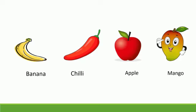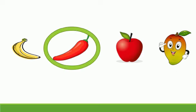Odd man out. See here: Banana, Chili, Apple, Mango. Actually, it's a group of fruits, but Chili is a vegetable. So it is the odd man out. Understood why it is odd man out? Because this is a group of fruits and Chili is a vegetable.